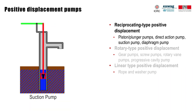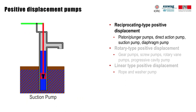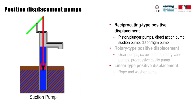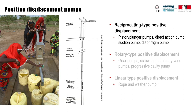Reciprocating type positive displacement pumps are commonly used in a number of applications. Many community hand pumps for dug wells and boreholes are reciprocating piston or plunger pumps. When water is available less than 7 meters below ground, suction pumps are often of interest as they can be easily accessed at ground level to perform maintenance. For deeper wells and boreholes, direct action hand pumps or high lift hand pumps can be used.